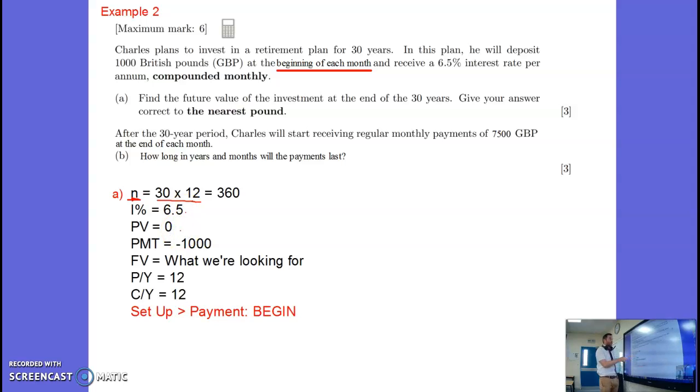We've got present value is zero because he's paying into this account. Payments are going from him to the bank. So that's negative 1000. The future value is what we're looking for. We want to know the future value of the investment after 30 years. Payments per year, he's doing it monthly. Compound appearance, compounded monthly. So there we go.